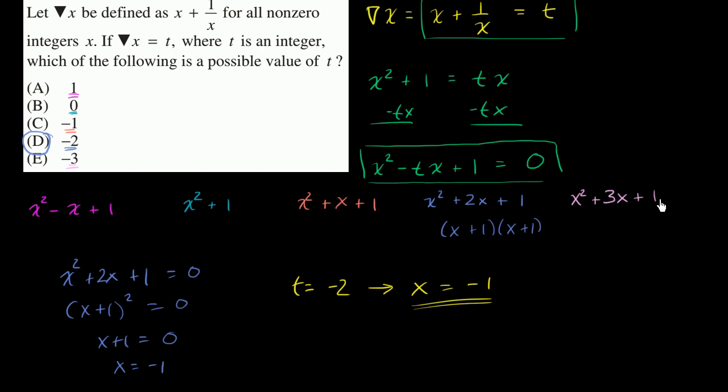And same thing over here, two numbers whose product is one and whose sum is three. Can't think of it, but this one right over here, you can.